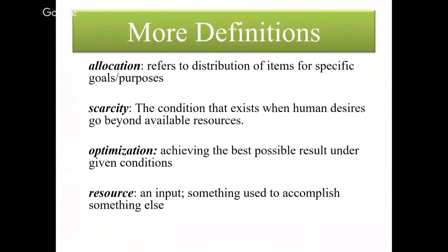Now, scarcity is a condition that's real, it exists, and we have to manage it. It's where human desires go beyond available resources. Optimization means achieving the best possible results under given conditions — that's a concept for microeconomic students in 2302. For macro, optimization just does not work because there are too many variables we can't control, whereas with micro there are fewer variables and they're more often in control of the individual. A resource refers to an input — something used to accomplish something else. We are about to hit our first major student learning objective: SLO number one says you need to name the four types of economic resources, find them, give specific examples, and explain how they are scarce.